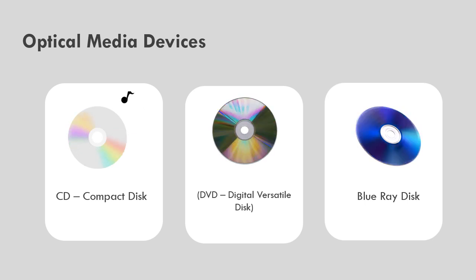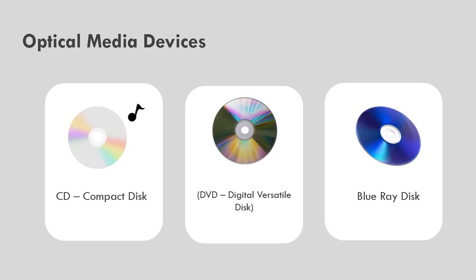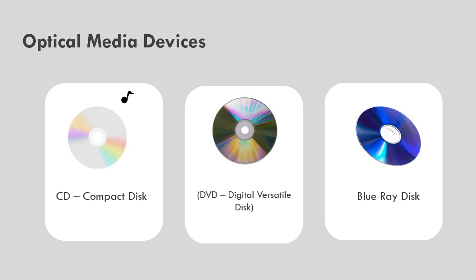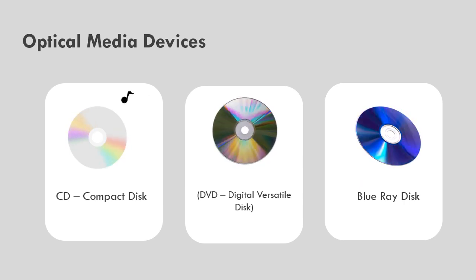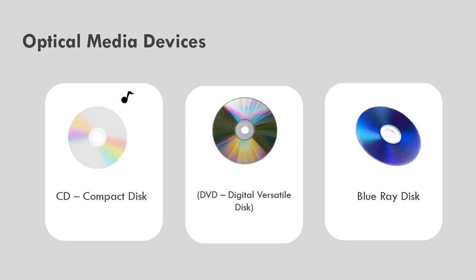Optical media devices. CD — compact disks. There are two types: recordable and rewritable. The capacity of these disks is 650 megabytes and 700 megabytes.